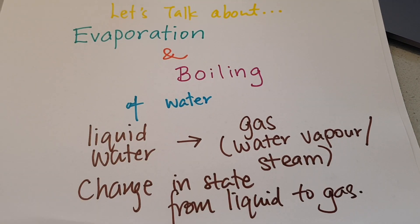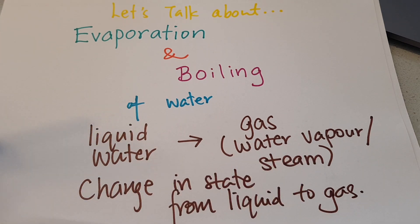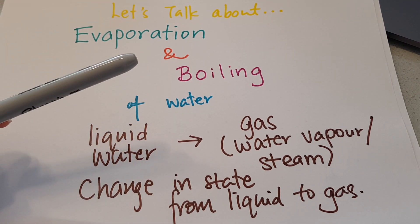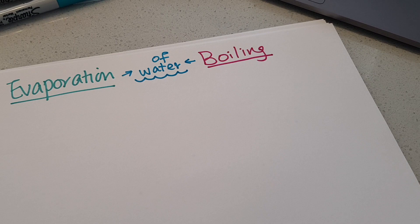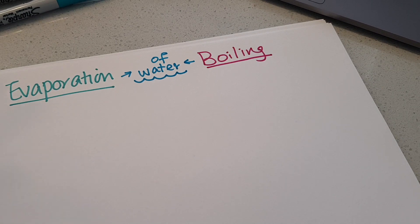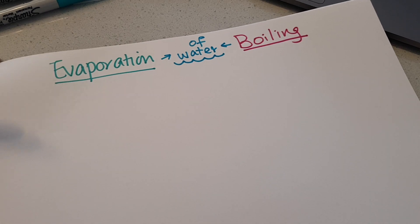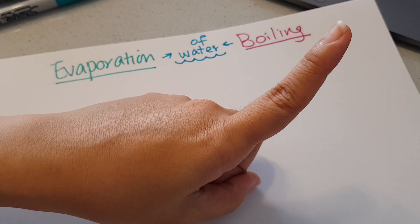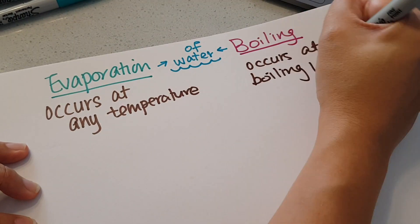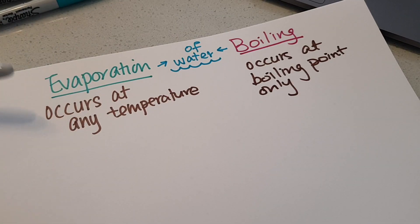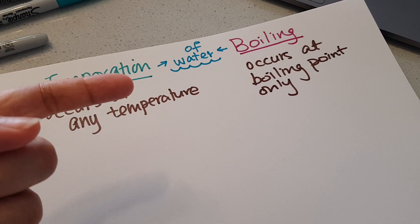So that is the similarity between evaporation and boiling. Next, we are going to look at the differences between evaporation and boiling — there are a few of them. The first main difference is that evaporation occurs at any temperature, as long as the water is in liquid state. Because the similarity we established is that both involve a change in state from liquid to gas, they must start from a liquid state first.